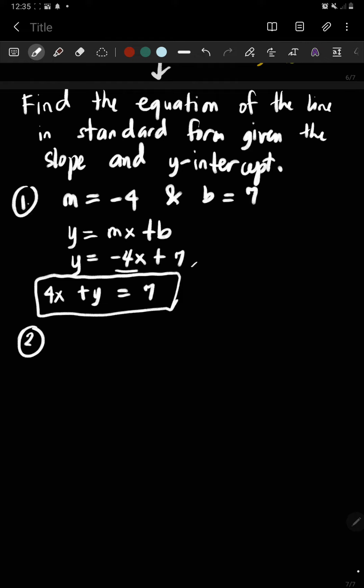Another example, you have your slope that is 2/5 and your y-intercept negative 8. So the same thing, you use the slope-intercept form which is y equals mx plus b. So m is 2/5 x plus b is negative 8.